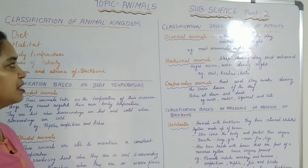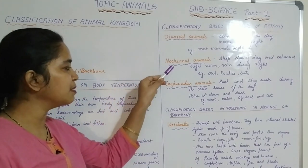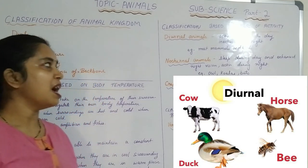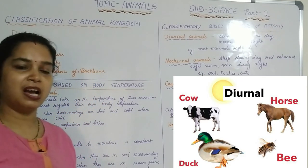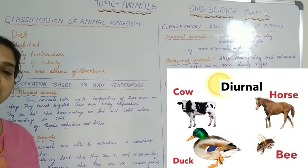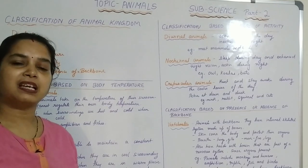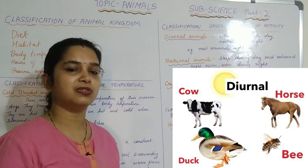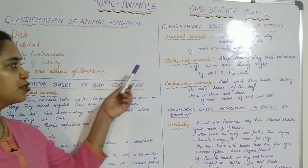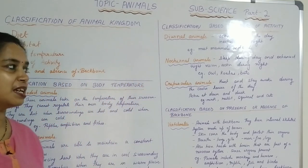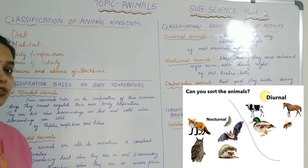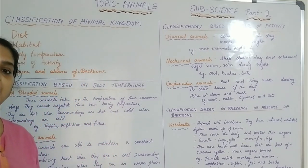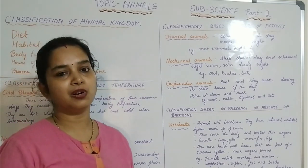On the basis of hours of activity, animals are classified into diurnal, nocturnal, and crepuscular animals. Diurnal animals are those who are active during the day and inactive at night — for example, human beings and other mammals like lions and tigers, and mostly birds. Nocturnal animals sleep during the day, have very good night vision, and are active during the nighttime — examples include bats and owls.